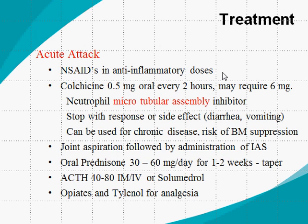One important consideration when treating with colchicine is to stop the drug as soon as side effects appear, such as diarrhea or vomiting. It can be used for chronic cases, but the risk of bone marrow suppression is a concern. Nowadays, colchicine is not used for acute attacks unless NSAIDs are not tolerated well.